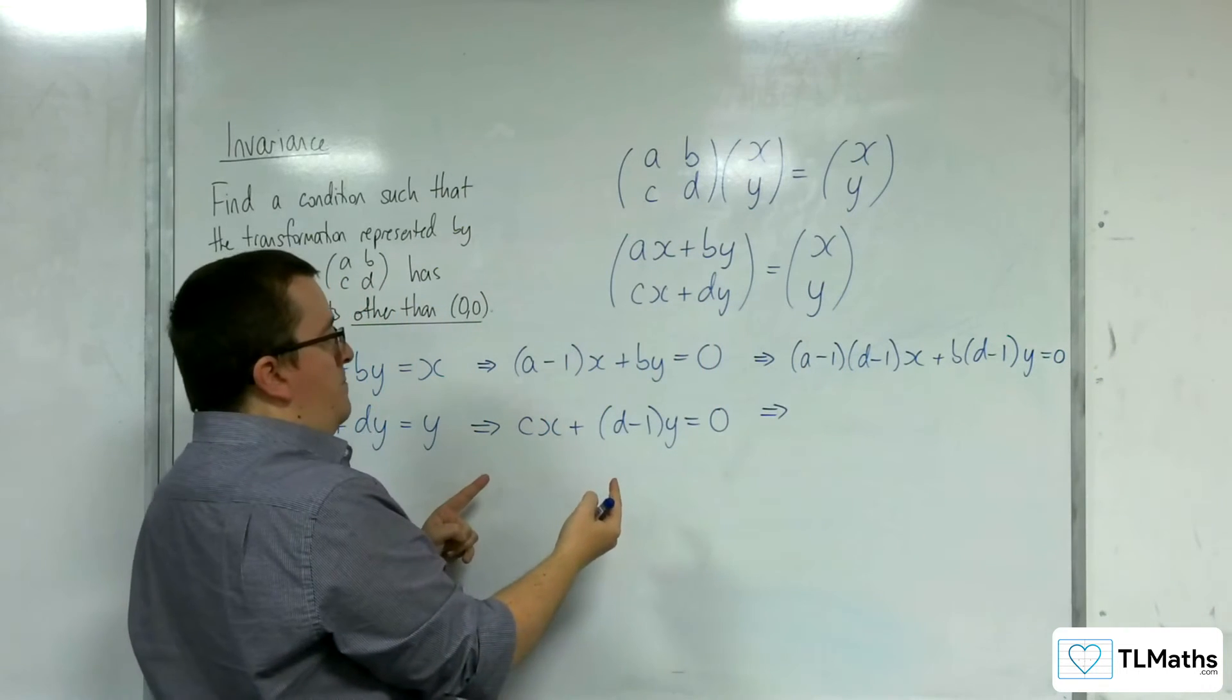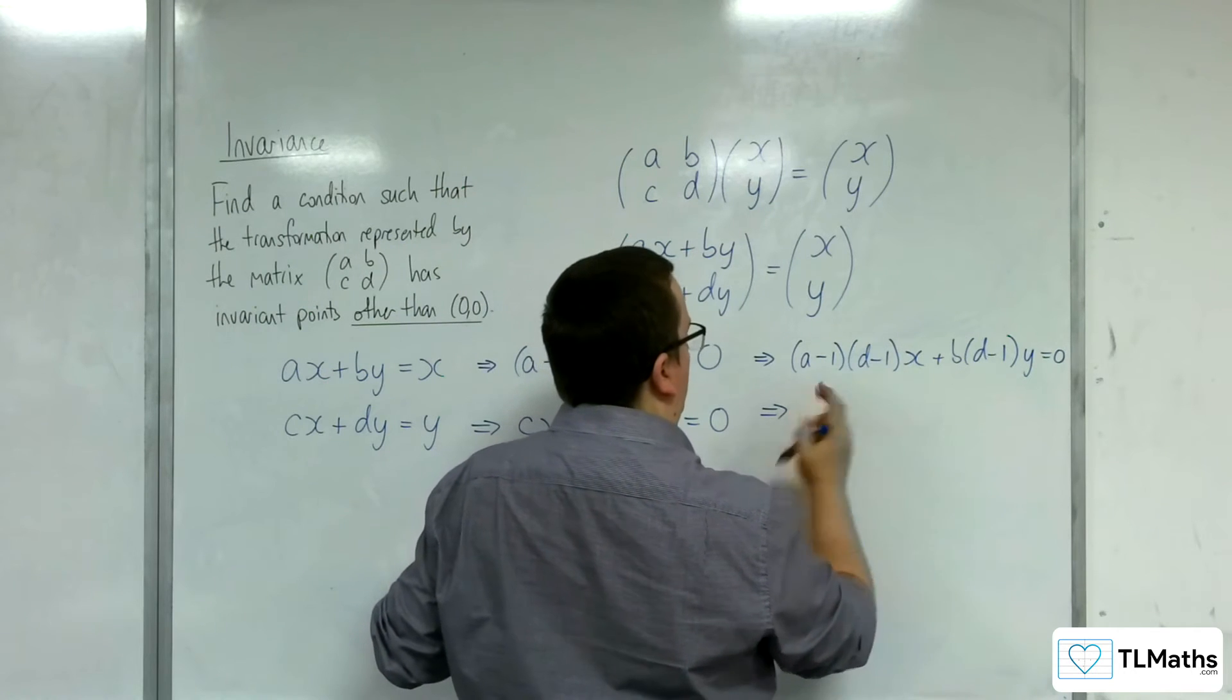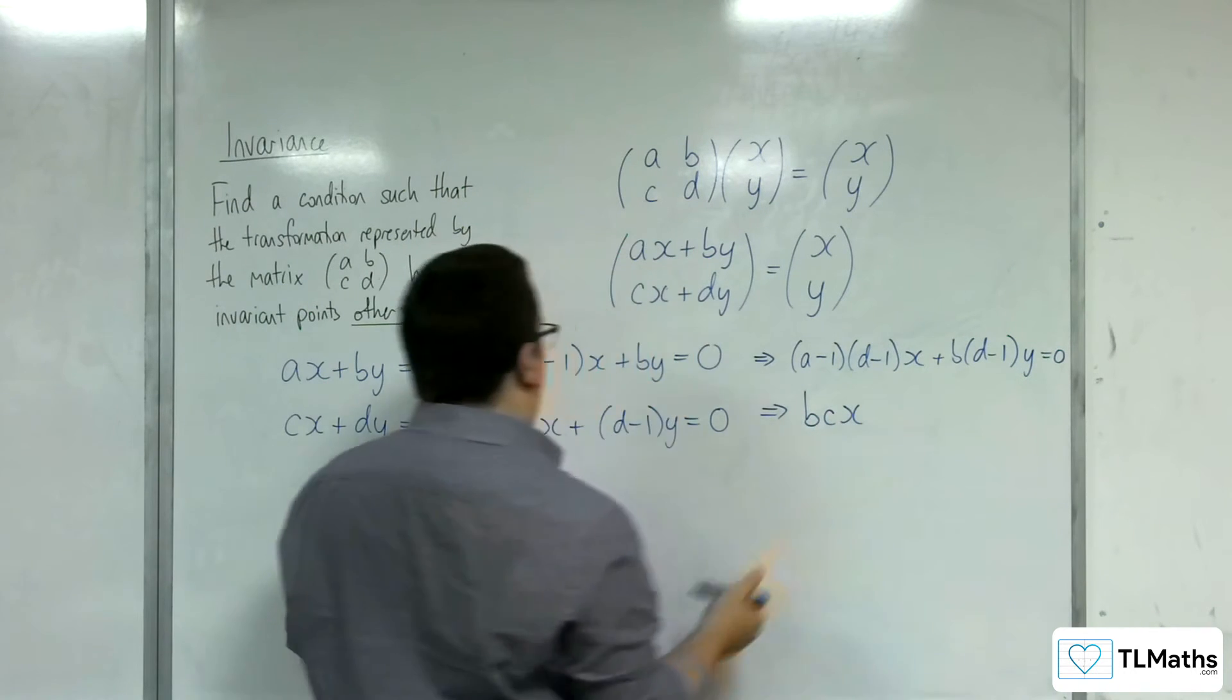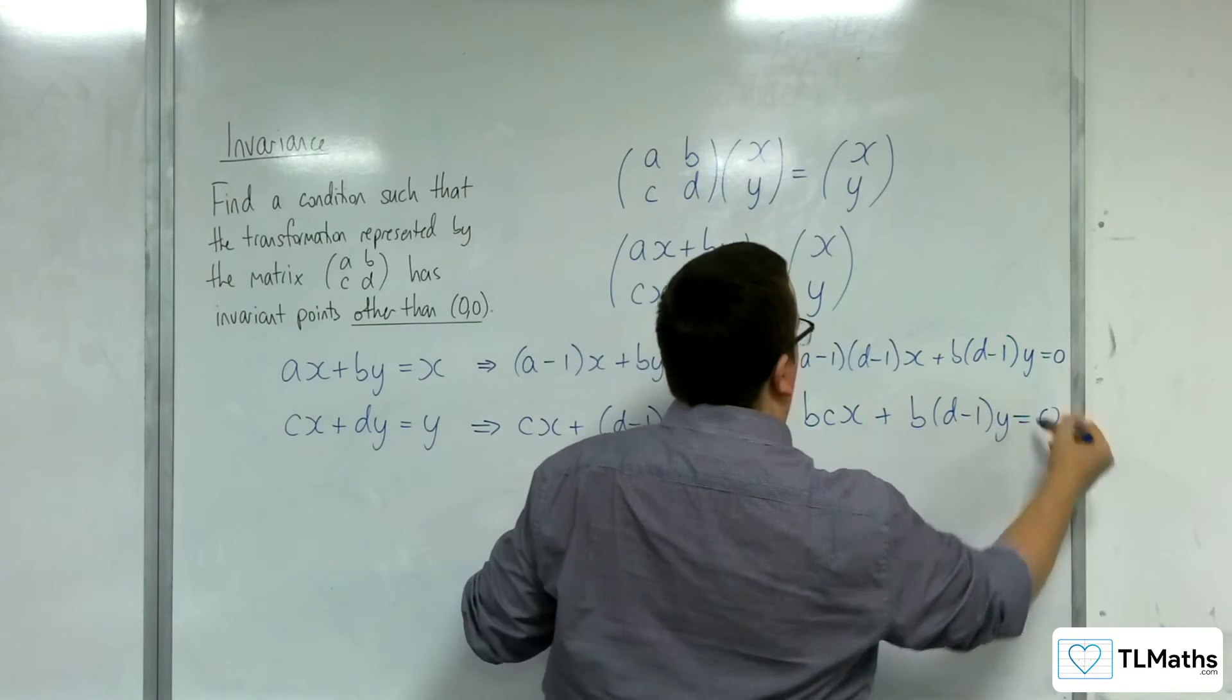And multiply this equation through by b. So we're going to get bcx, or let's say bcx + b(d-1)y equals 0.